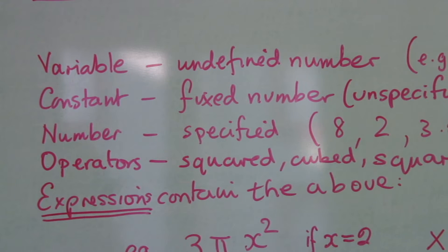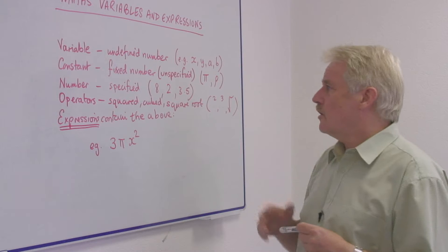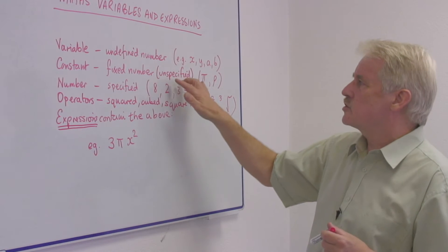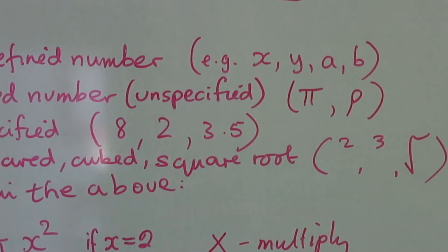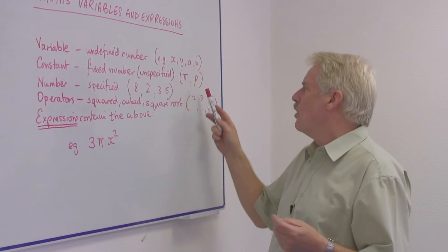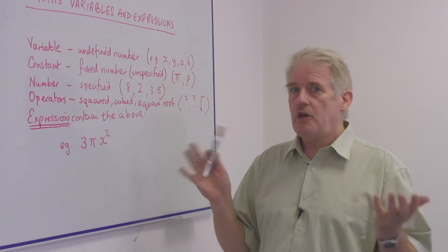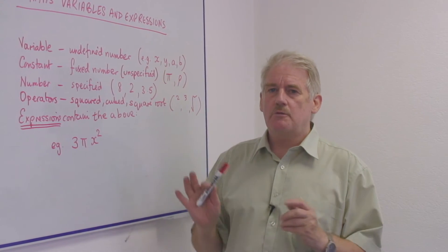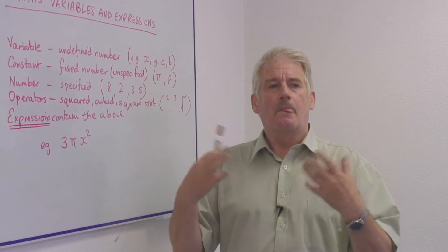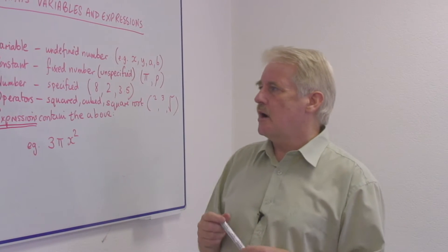Constants. A constant is a fixed number. Now, a constant usually is a fixed number which is not specified. So it might be pi, which is a number we know, or rho, which is a number we don't know. But it is always going to be the same, and it is a number we are referring to at some time.